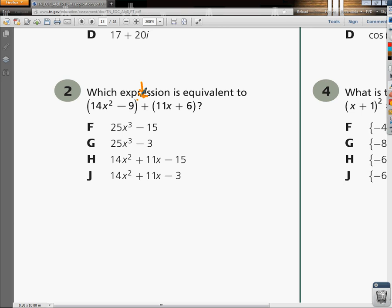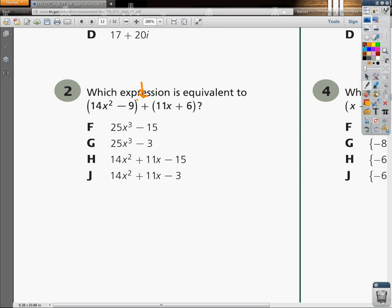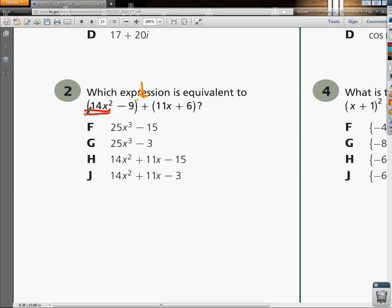I'm going to make a little pretty mark under each thing that's alike so I can find them. I'm going to make two lines under anything with x squared. I'm going to leave no line under things that do not have anything, so my real numbers. One line under my x.